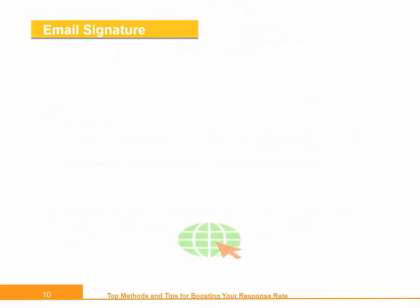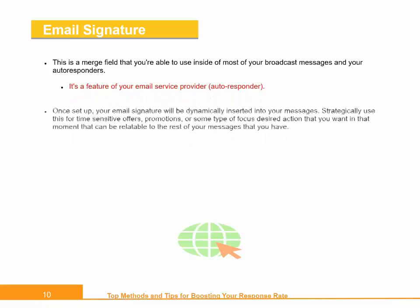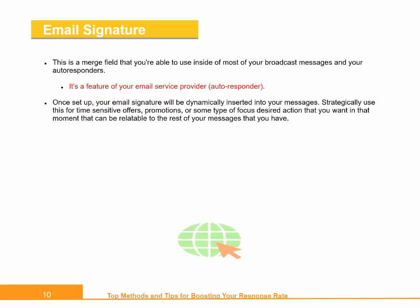Email Signature. This is a merge field that you're able to use inside of most of your broadcast messages and your autoresponders. It's a feature of your email service provider. Once set up, your email signature will be dynamically inserted into your messages. Strategically use this for time-sensitive offers, promotions, or some type of focused desired action that you want in that moment that can be relatable to the rest of your messages.